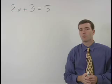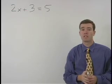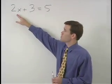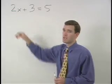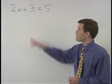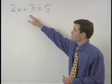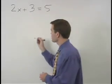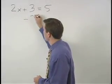Our first step will be to isolate the term containing x, which in this case is 2x. To isolate 2x we have to get rid of this plus 3 by subtracting 3 from both sides of the equation.